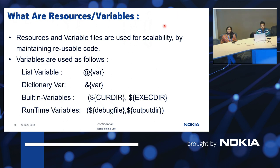Resource and variable files are used for scalability by maintaining reusable code. When a test case becomes clumsy, we can import resource files and execute. Variables in robot framework include: list variables, which are arrays denoted by @var; dictionary variables, which are key-value pairs denoted by &var; built-in variables like current directory and execution directory; and runtime variables like debug file and output directory. It depends on the user requirement and input.